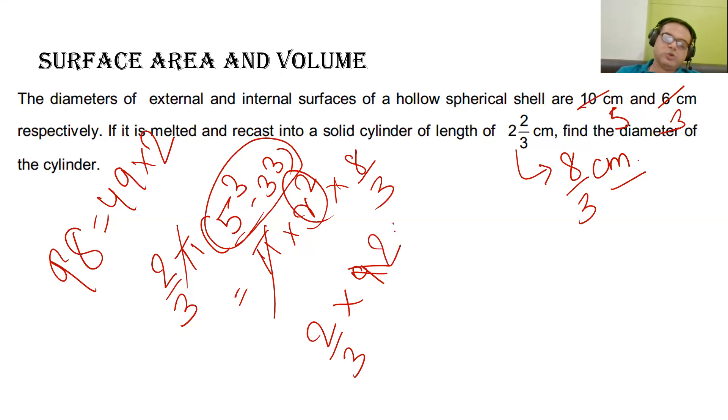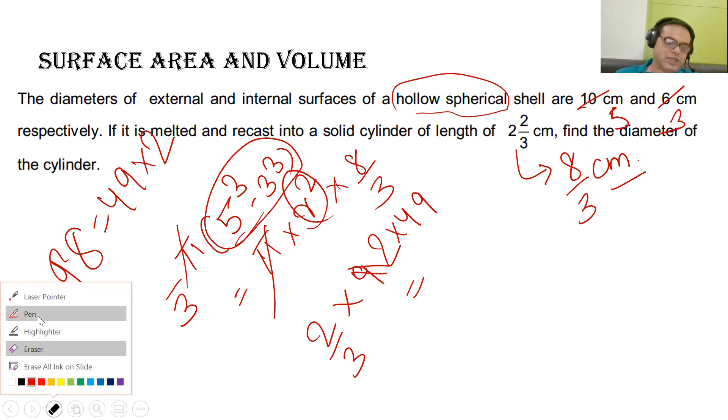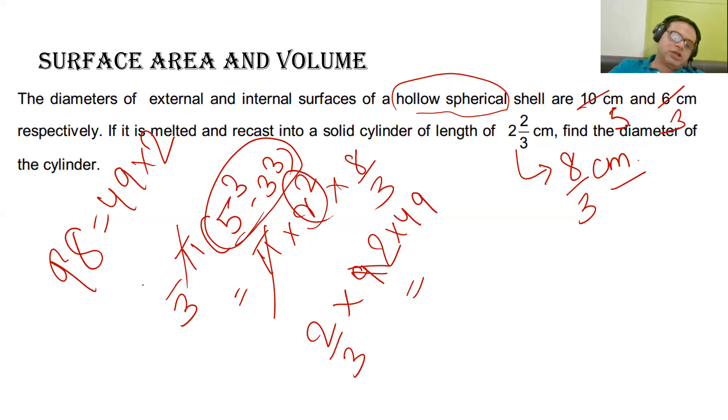So what I have done, this is equal to 2 into 49 will be equal to... Sir, this will not be equal to 2 by 3. Hollow sphere is 4 by 3. It will be 4 by 3. Yes sir, it will be 4 by 3. Okay, luckily, if we have given another mistake, it will be 4 by 3.